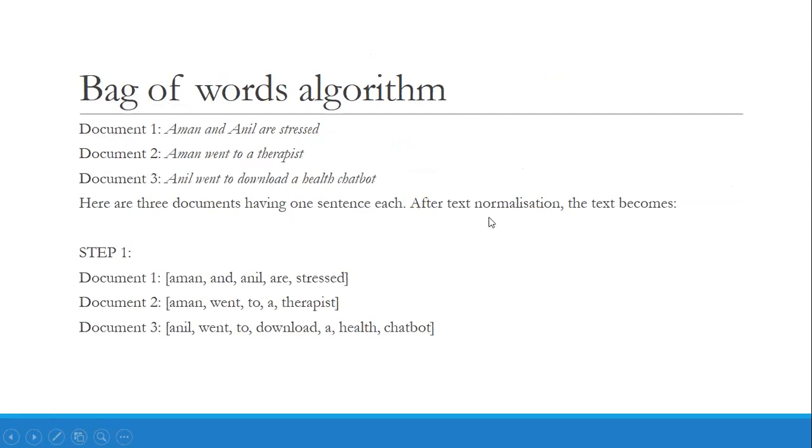Now in step one, we need to apply text normalization. After that, every word is considered as a token and separated into tokens. After text normalization, after step one is completed, this is how it looks.